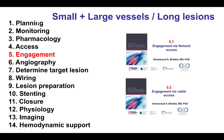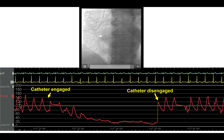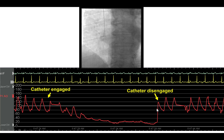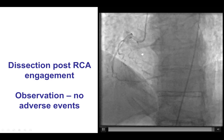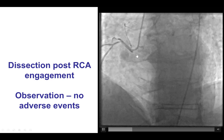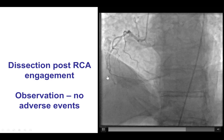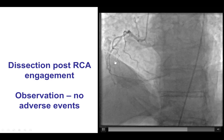However, when it comes to engagement, there can be issues when engaging both small vessels as well as large vessels. For small vessels, the issue is that the catheter may cause dampening upon engagement. That should be appreciated because, if not, injection while the pressure is dampened can lead to dissections, as shown in this small non-dominant right coronary artery. Most of the time this is not a big deal, but they should best be avoided.